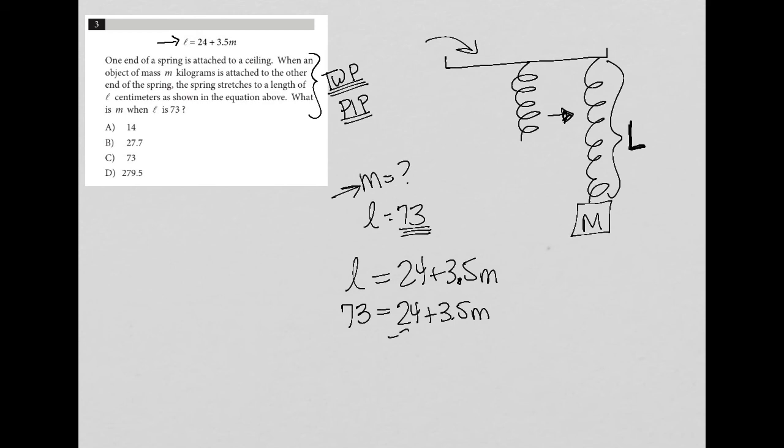Since I'm trying to solve for M, I can just isolate M, which starts off by subtracting 24 from both sides. 73 minus 24 is 49. So I have 49 equals 3.5M.